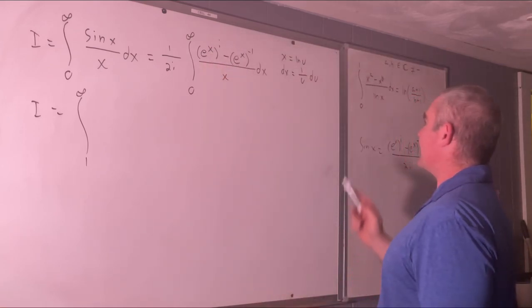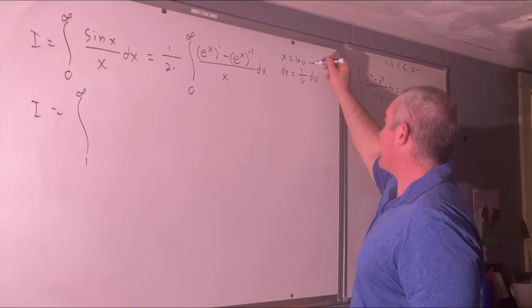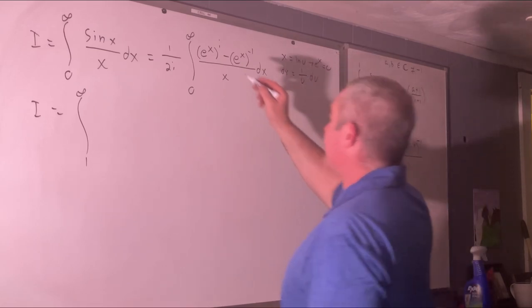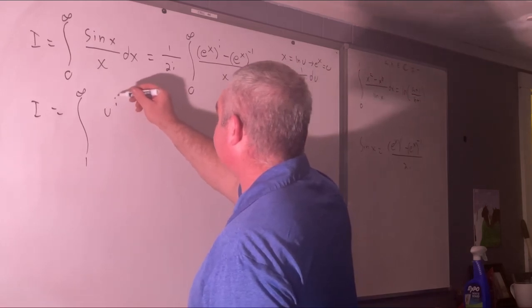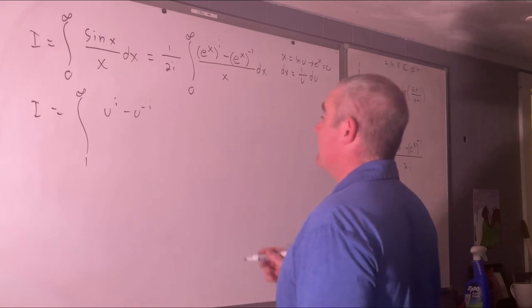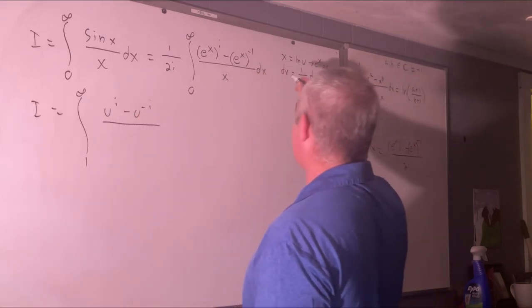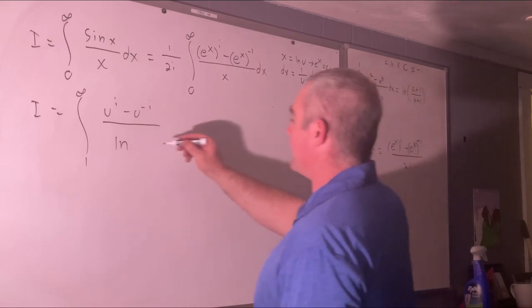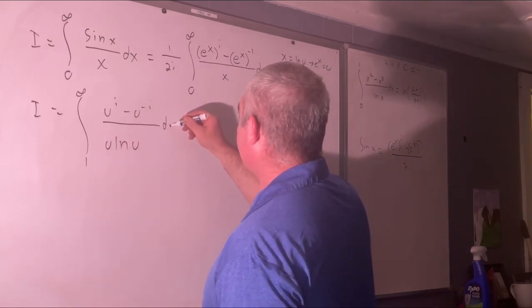We have e to the x is equal to u. This implies that e to the x equals u. So we just have u to the i minus u to the negative i over 2i all over x, which is natural log u, times dx, which is 1 over u du.